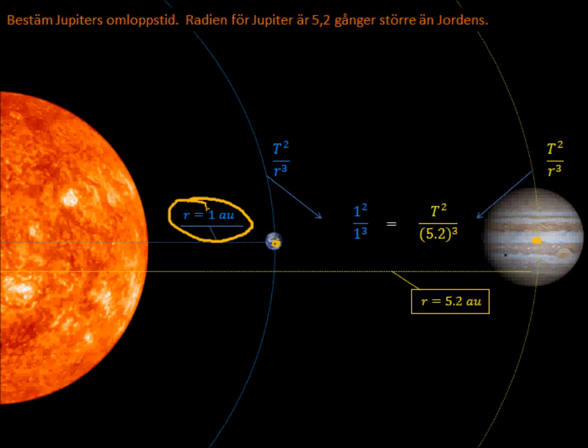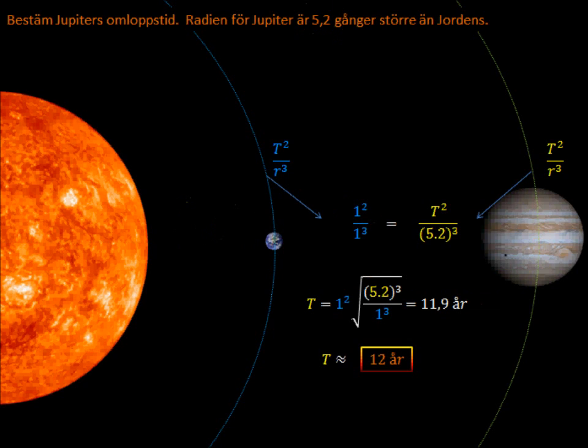All right. One AU, one astronomical unit, that's the distance between Earth and the Sun. And then we have this, the time, one year and one year squared. So the one side of the equation is going to look quite nice. And then we see the relationship here. Jupiter is about 5.2 times larger than Earth's radius to the Sun. So let's see how this goes then.